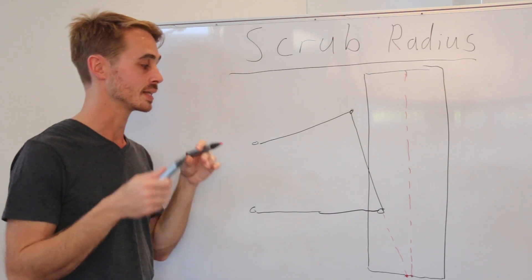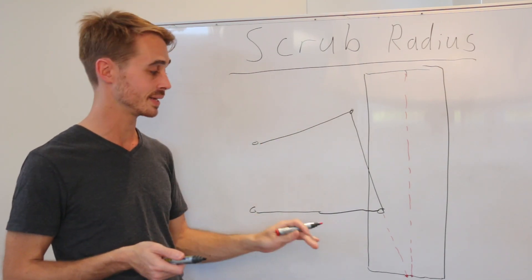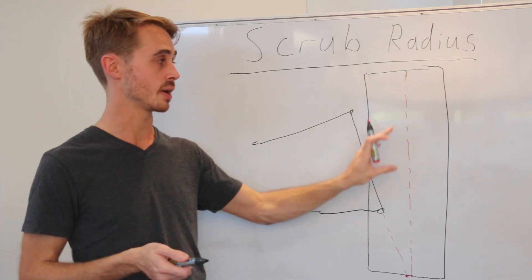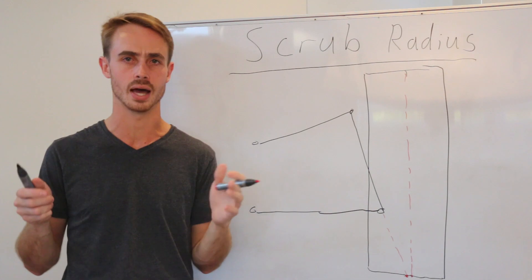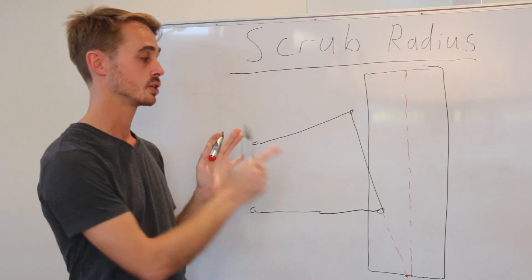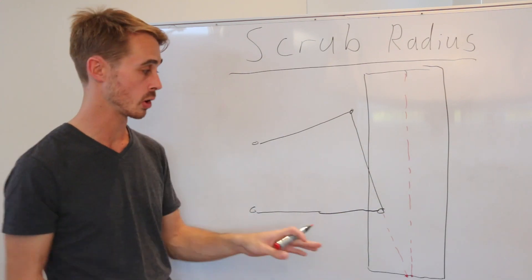But more importantly, it's a structural issue. So in a lot of cars where you can't run more kingpin inclination angle and you have to have the tyre fairly offset, or if you're using offset spacers on a car, as a lot of people do, which spaces out the tyre, you end up with a lot of extra leverage being applied on your components.